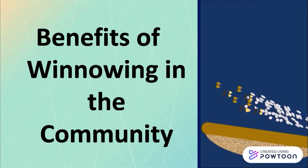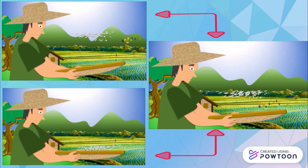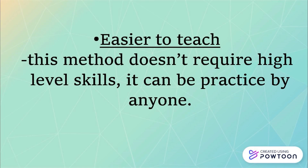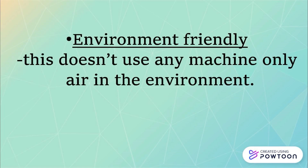Benefits of winnowing in the community. Winnowing is mostly used in agriculture, especially in farming. Farmers use winnowing to remove husks and chaff from rice grains. We also do this before cooking rice to make sure there is no husk or dust in the rice grains. Benefits include less cost production — farmers do not need to buy machines to separate grain from chaff — and it is easier to teach, as it doesn't require high-level skills and can be practiced by anyone. It is also environment-friendly, using only air.